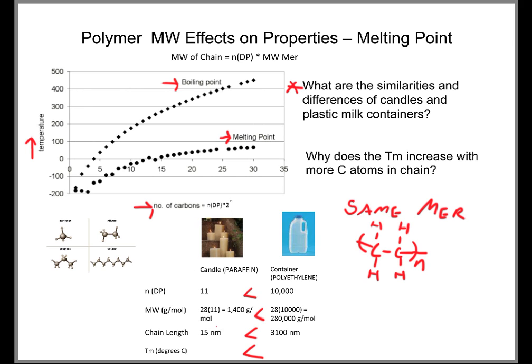Let's find what the melting point of this candle would be because we know the degree of polymerization is given as 11. We need to determine the number of carbons from the degree of polymerization. The number of carbons is equal to the degree of polymerization, which is 11, times 2. The reason why it's times 2 is because in the mer we have 2 carbons. So, we have 11 times 2, giving us 22 carbons.